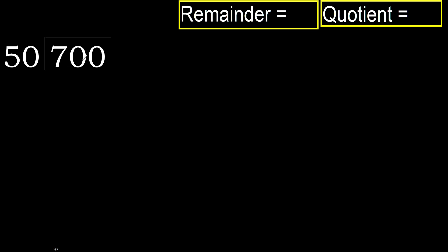700 divided by 50. 7 is less, therefore next. 70 is not less, therefore with 70.